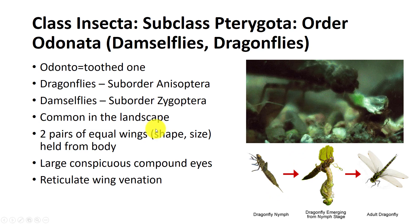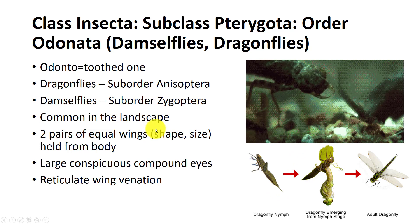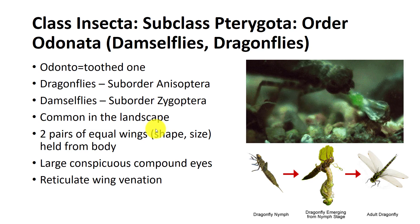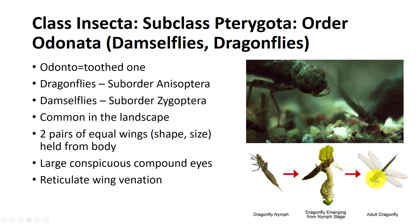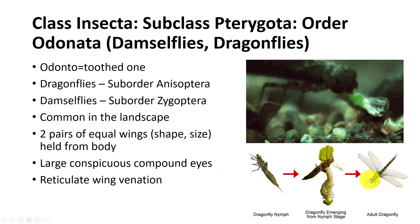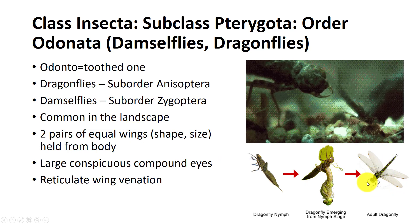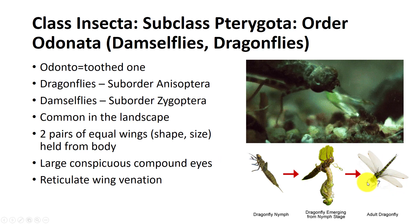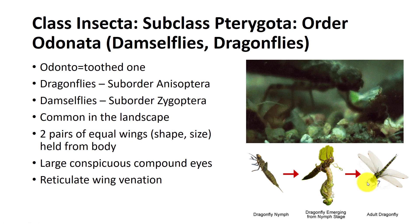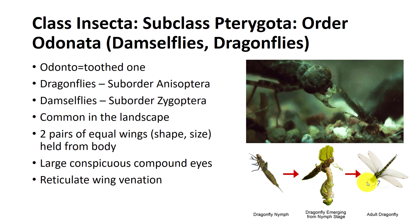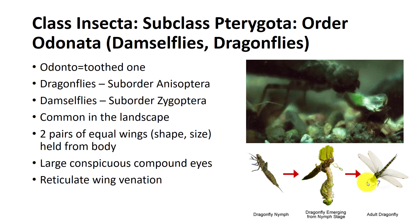Of all of their characteristics, the easiest way to tell a dragonfly or damselfly from other insects is the size of the eyes and the shape of the abdomen. If the eyes are very large in proportion to the head and the abdomen is long and thin, then it is almost sure to be Odonata.